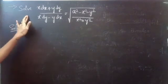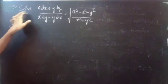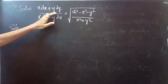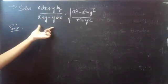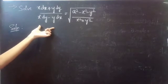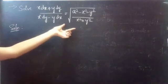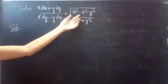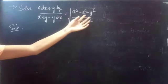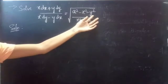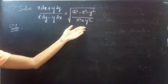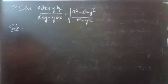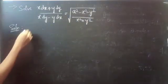Problem: Solve (x dx + y dy) / (x dy − y dx) = √[(a² − x² − y²) / (x² + y²)].